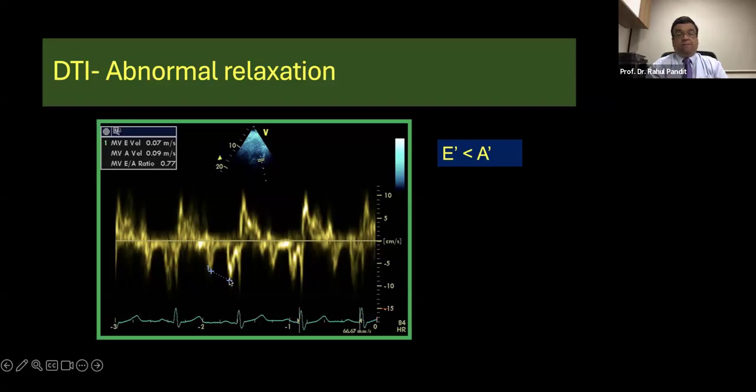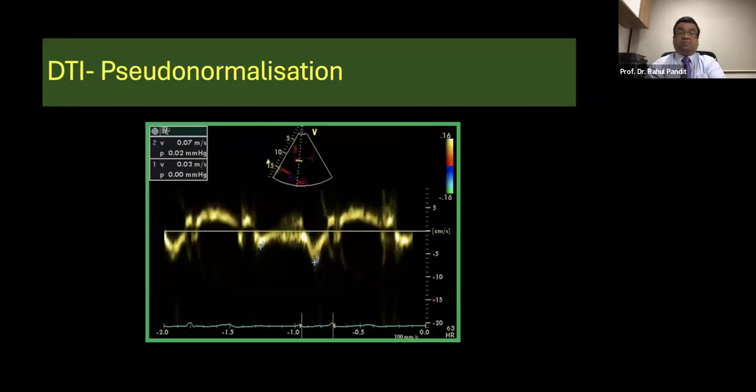So A wave is obviously bigger. We call this as A prime or A dash, E prime or E dash. So E and A velocities are reversed here. So this confirms abnormal relaxation.